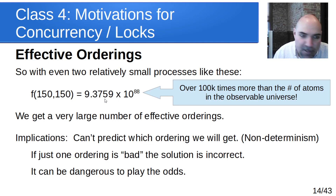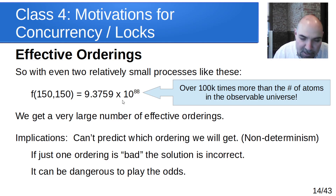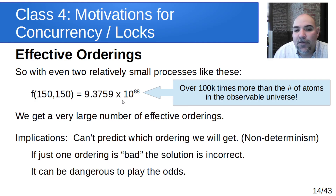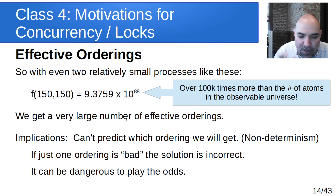It can be dangerous to play the odds. Even if a bad ordering is unlikely, it can happen — systems can be corrupted, crash, or give incorrect answers. The moral of the story is it's dangerous to play the odds. Testing does not necessarily help: if the odds of a bad ordering are low, you might not see it during testing, but you could see it once the thing is out in the field — planes crash, or other bad things happen if we're not careful.